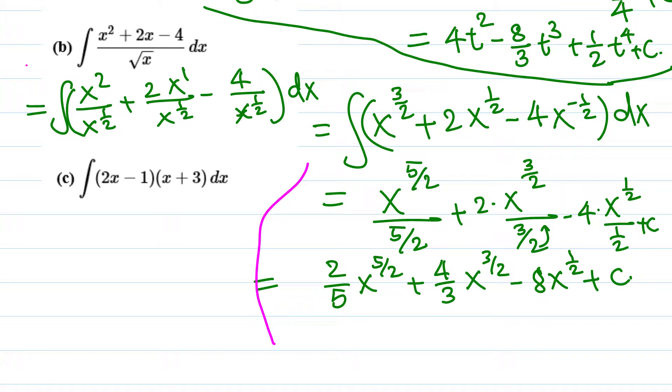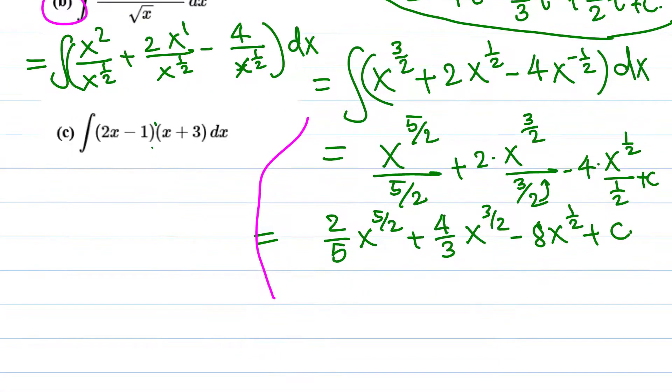That was part (b). Now in part (c) we got a product, so first of all we need to get rid of this product. We cannot just find the antiderivative of (2x - 1) times (x + 3) separately. We must get rid of this product.